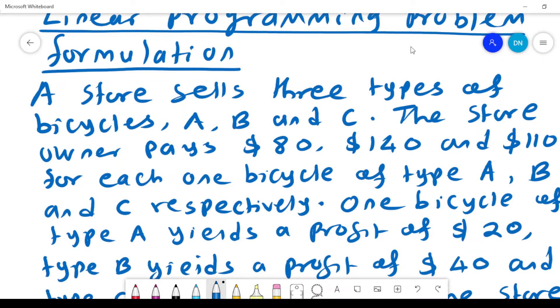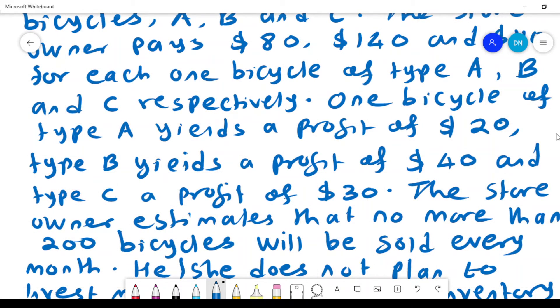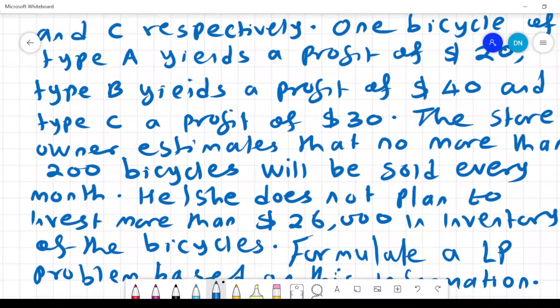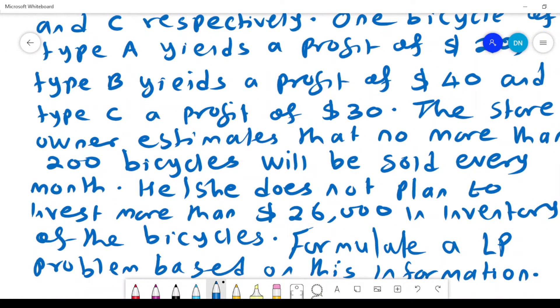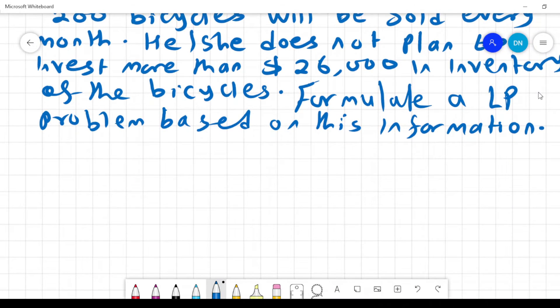One bicycle of type A yields a profit of $20, type B yields a profit of $40, and type C yields a profit of $30. The store owner estimates that no more than 200 bicycles will be sold every month. He or she does not plan to invest more than $26,000 in inventory of the bicycles.